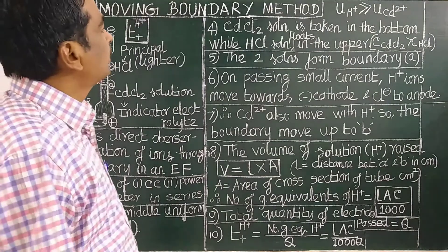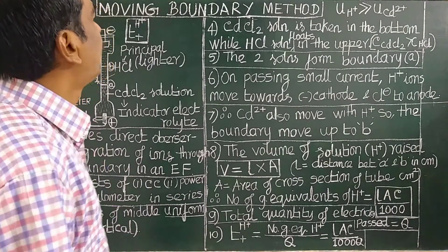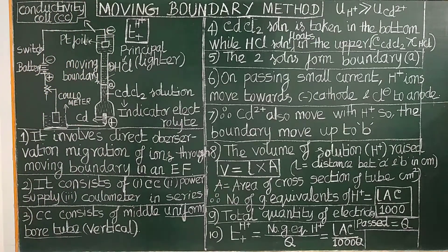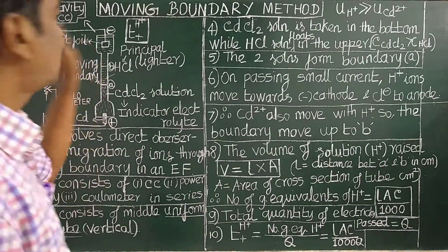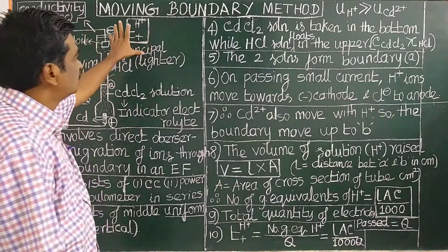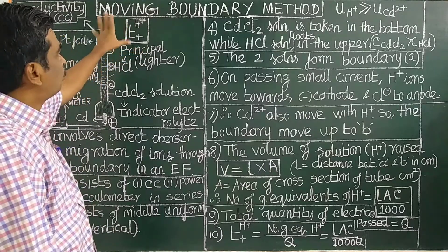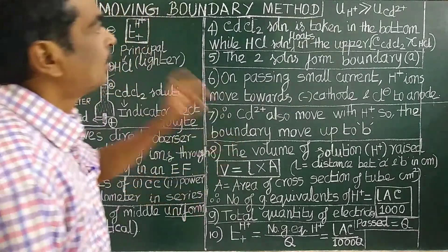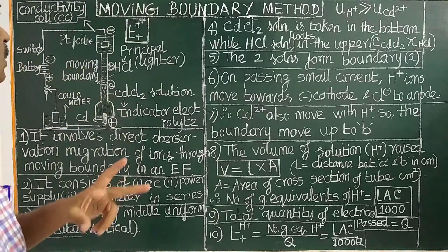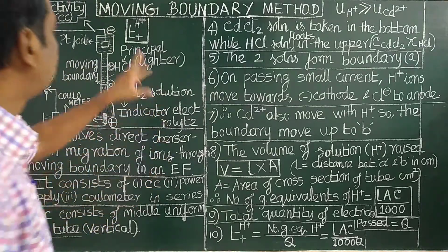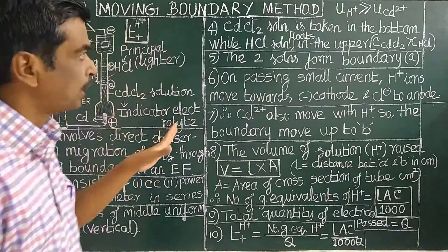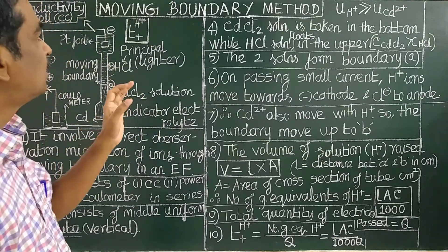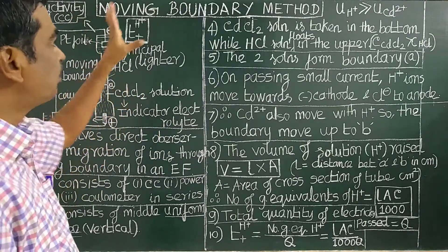Good morning. Determination of Transport Number by Moving Boundary Method. There are two methods for the determination of transport number: the Hittorf method and the Moving Boundary Method.